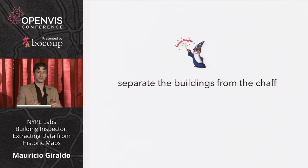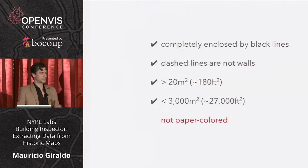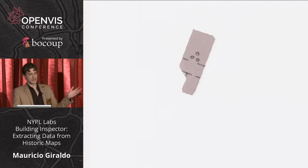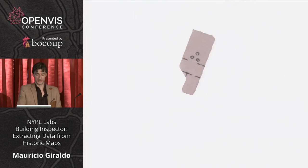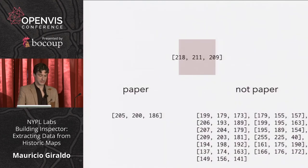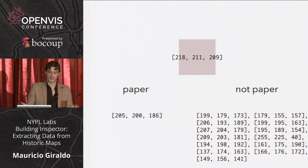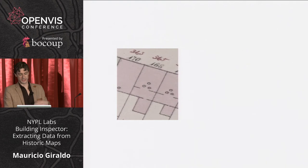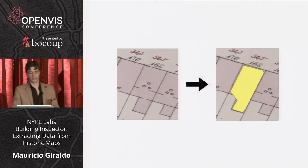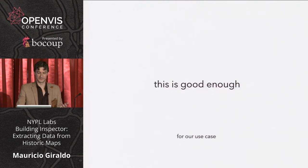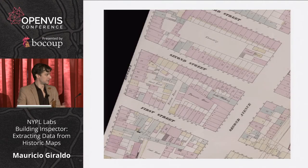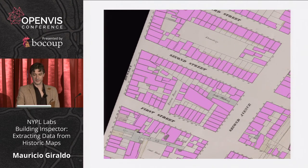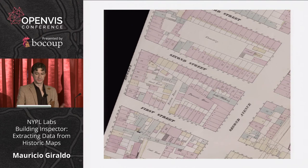Now we need to know what's a building and what is not. What we do is try to find anything that is not paper-colored. Given the resulting simplified polygon, we cookie-cut that polygon from the map, find the average color, and compare it to a list of approved or unapproved colors using a basic Euclidean distance. If it's close to paper, we ignore it. The end result: given this image, here's the resulting polygon. It's not perfect, but it's good enough for us — some polygon is better than no polygon.